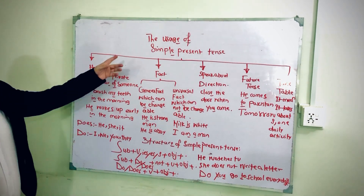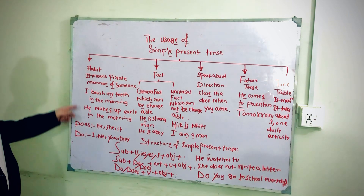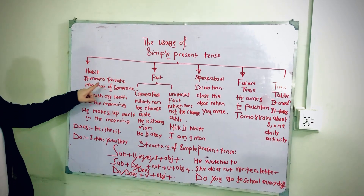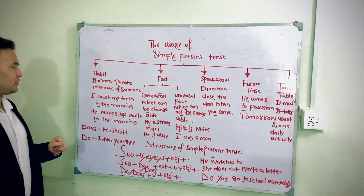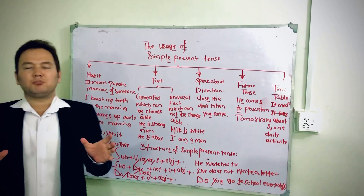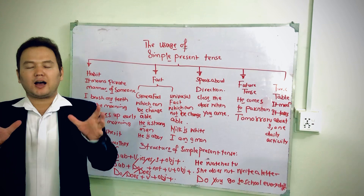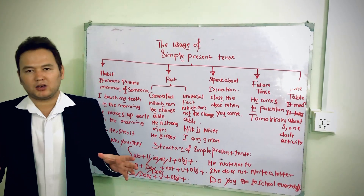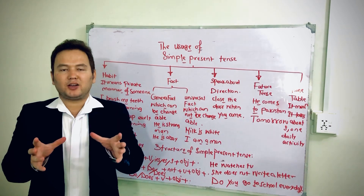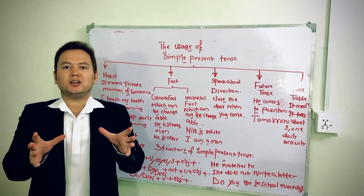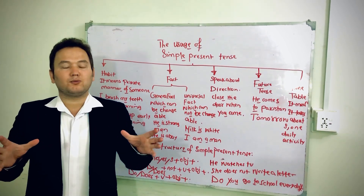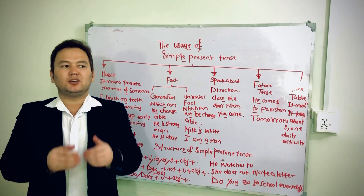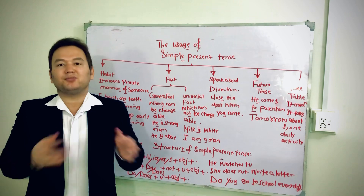The first usage of simple present tense is habit. Habit means the private manner of somebody — repeated actions. It is related only to a person individually, because everyone has different habits at different times.